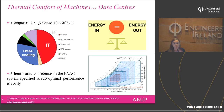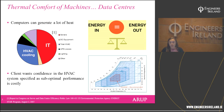Thermal comfort of machines is actually quite important, not just people. A standard computer warms up significantly during use; a whole building full of machines will get very hot very quickly. Typically, data centres are designed based on an energy-in, energy-out approach — we know how much heat is in there and therefore how much cooling is needed. But there's a lot of room for error, and the operating conditions for temperature and humidity in data centres are quite strict as per the ASHRAE codes.